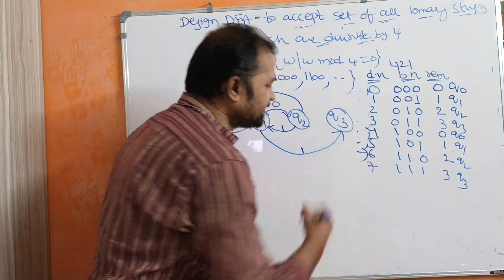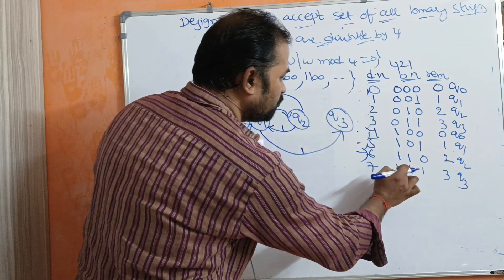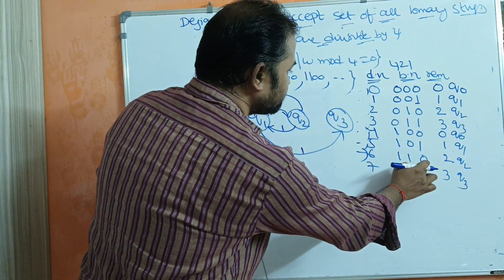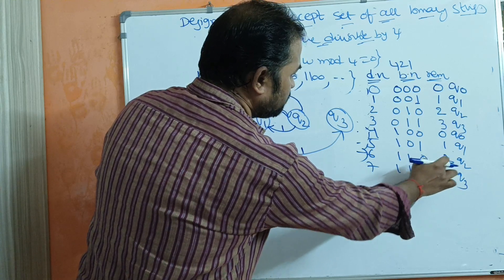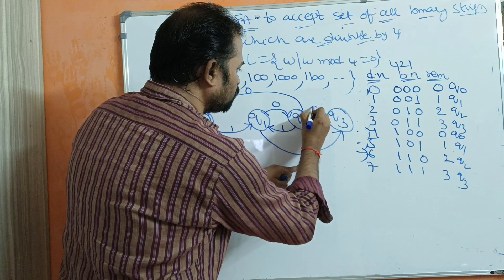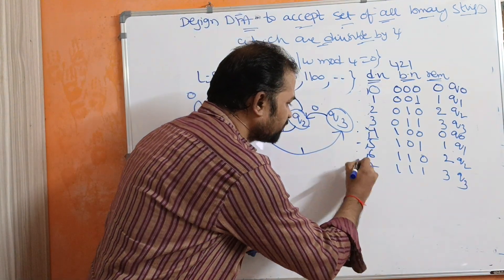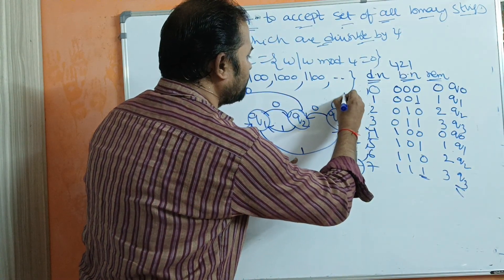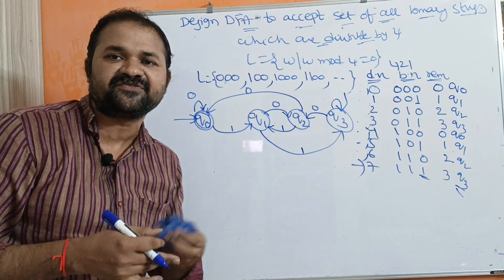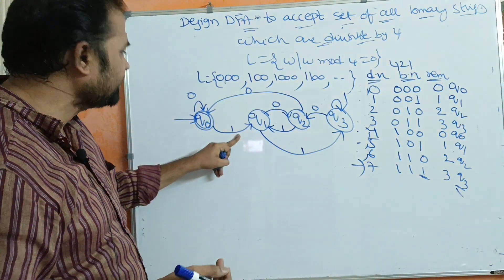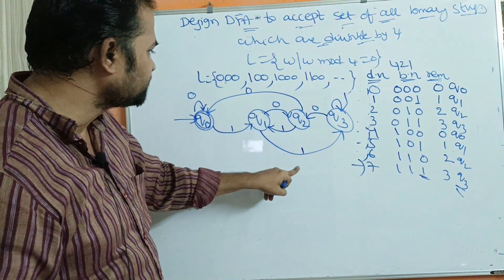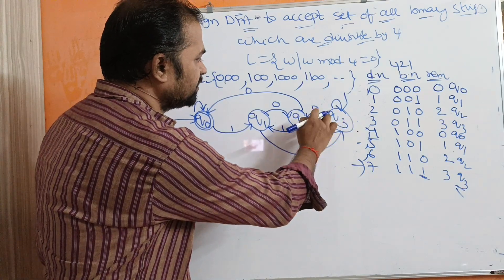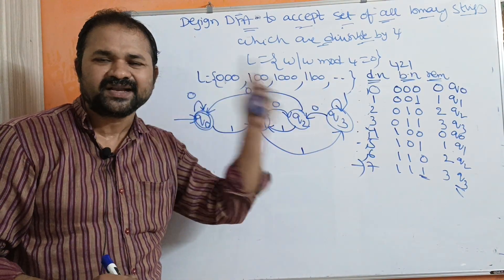For decimal 6 (binary 110): Q0 on 1 goes to Q1, Q1 on 1 goes to Q3, and Q3 on 0 goes to Q1. For decimal 7 (binary 111): Q0 on 1 goes to Q1, Q1 on 1 goes to Q3, and Q3 on 1 goes to Q3 — a self-loop. Now let's verify this is a DFA: Q0 uses 0 and 1, Q1 uses 0 and 1, Q2 uses 0 and 1, Q3 uses 0 and 1 — confirmed DFA.